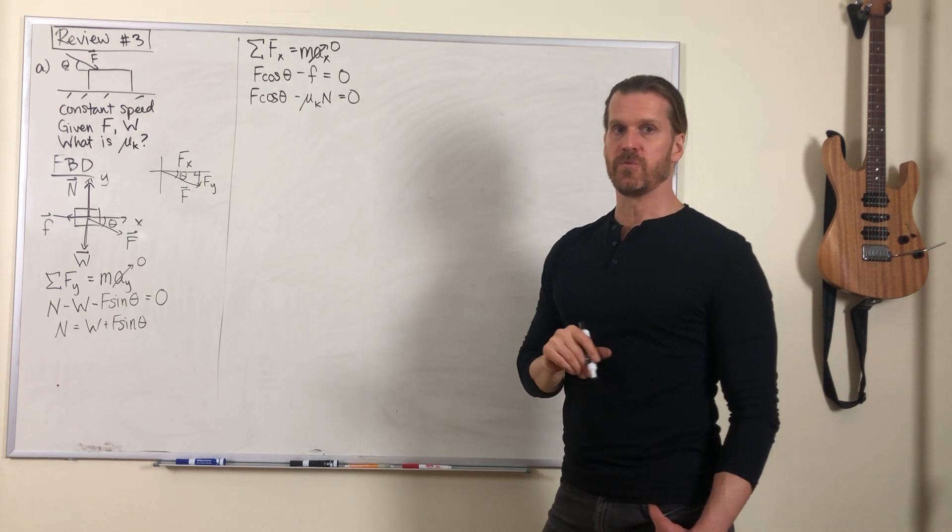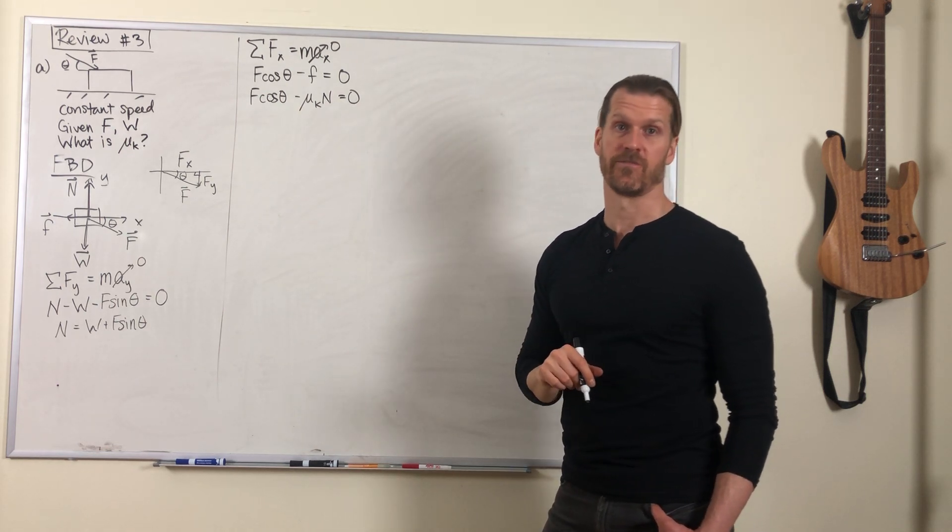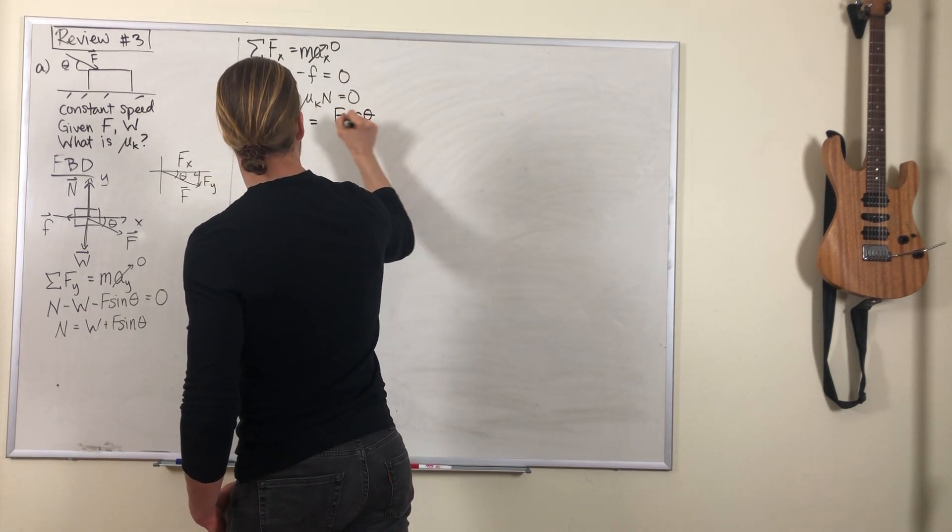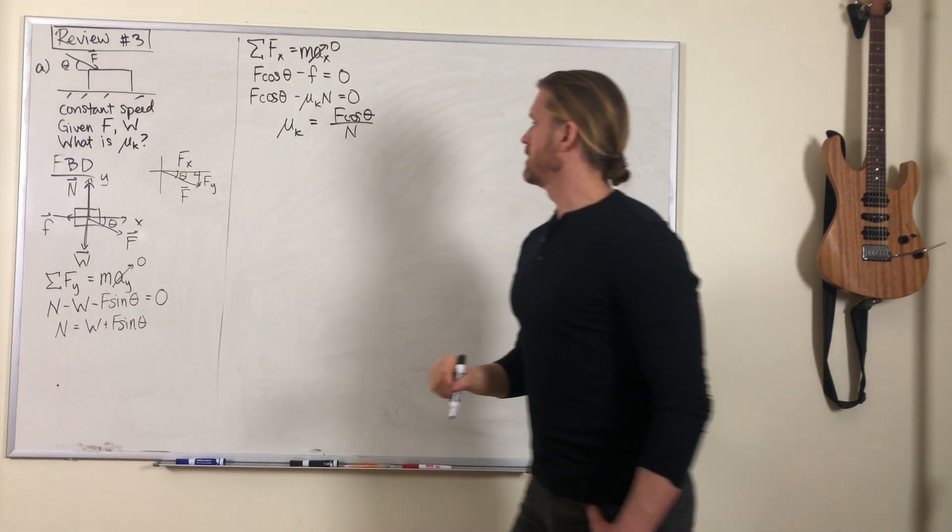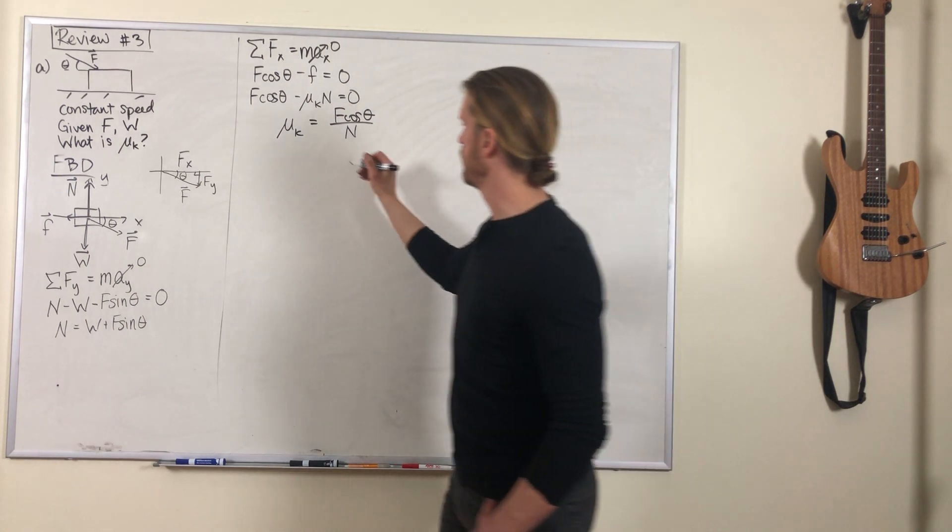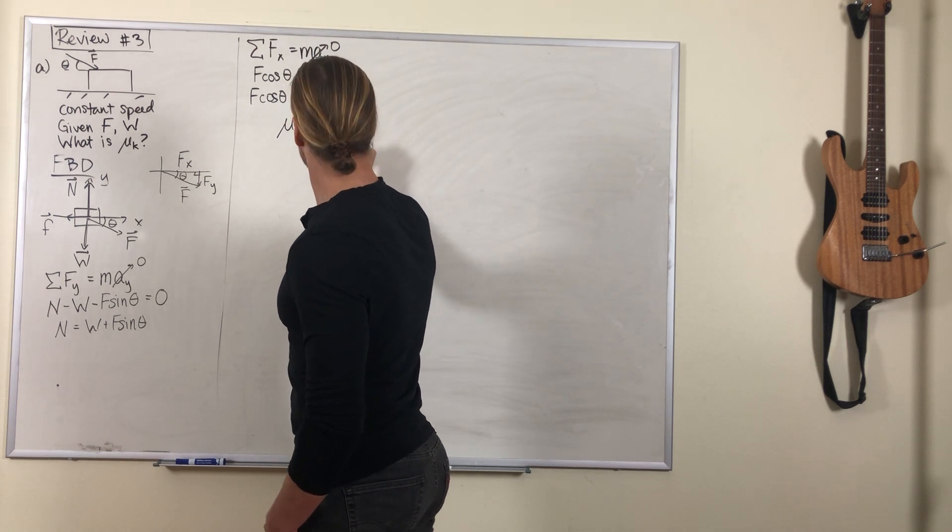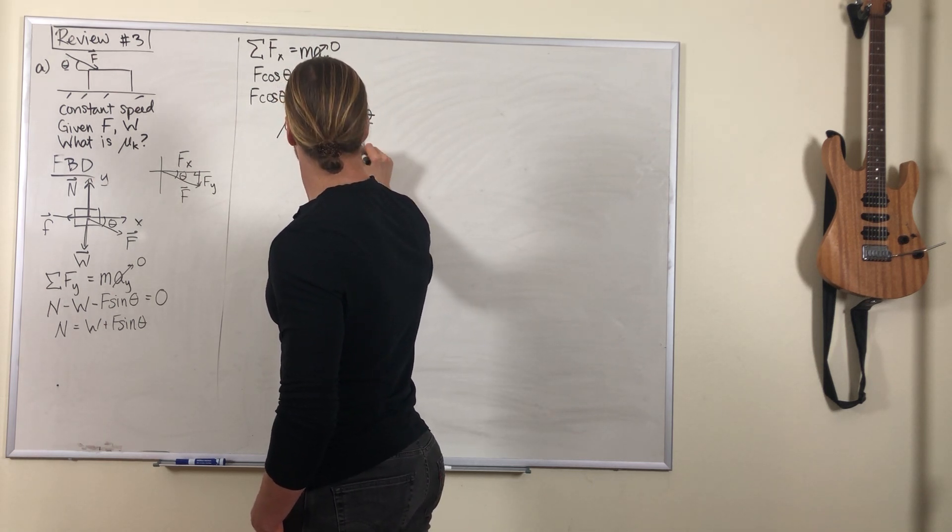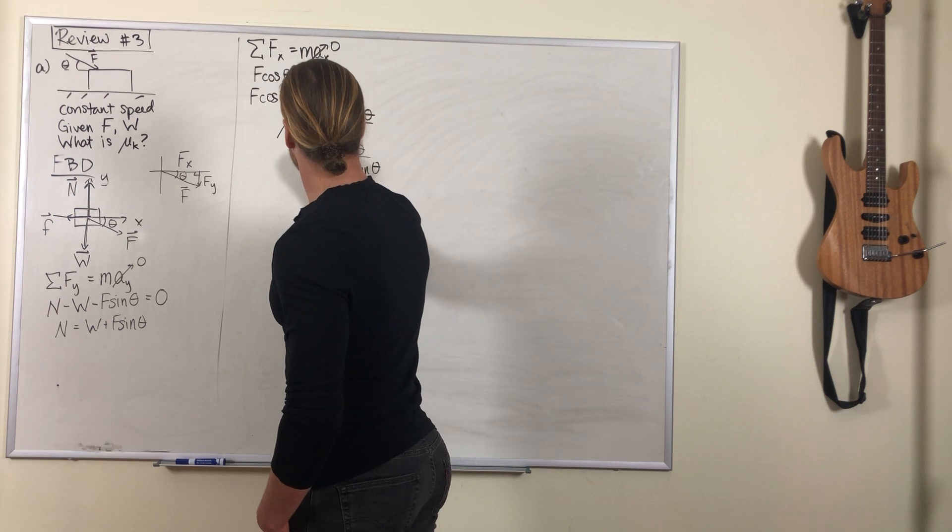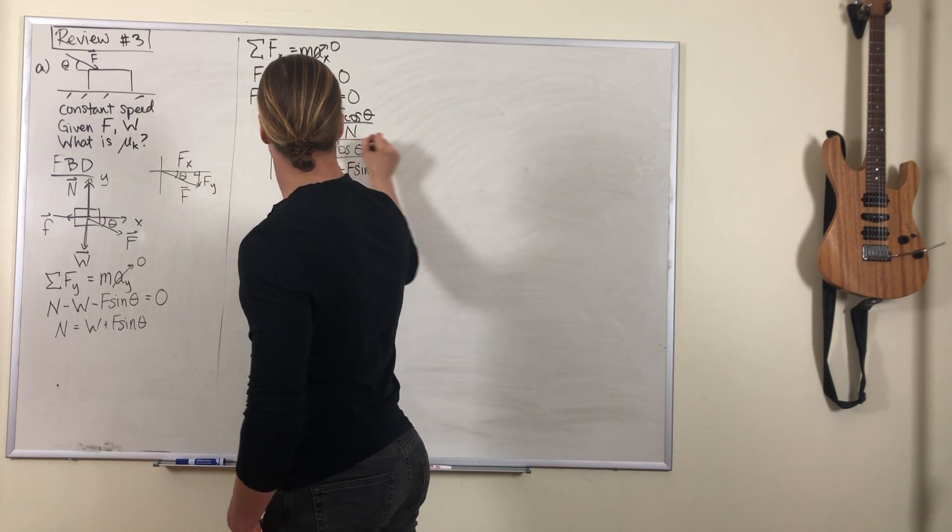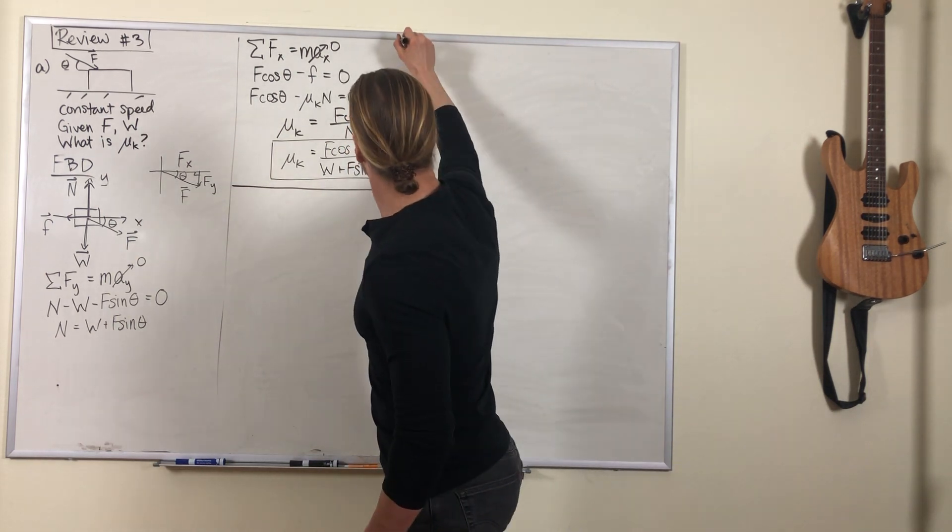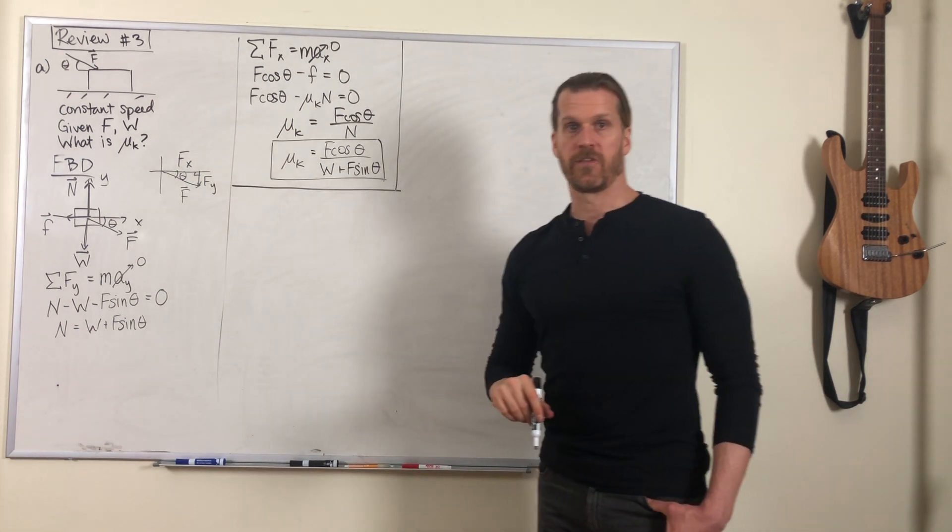Friction force equals mu times N, the definition of friction force. So that coefficient is the x component of the push divided by the normal force, which we found has this expression: W plus F sine theta. And there's your answer to part a.